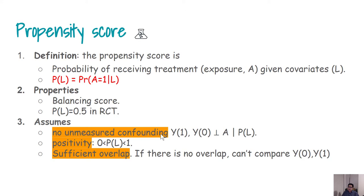The first assumption is that we cannot have unmeasured confounding — the complete list, or at least the sufficient list, of covariates should be included. Positivity is another assumption, meaning this probability cannot be exactly 0 or 1. A person should not be guaranteed to receive treatment or guaranteed not to receive it. All subjects must have some possibility of getting the treatment, regardless of their characteristics.